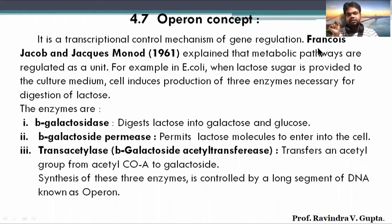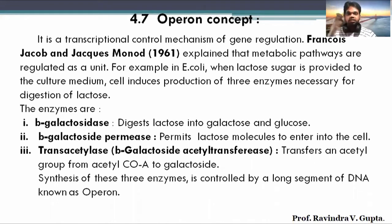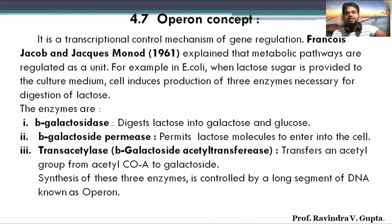This concept was given by scientists Francois Jacob and Jacques Monod in 1961. They explained that metabolic pathways are regulated. What is the meaning of metabolic pathway? If there are chemical reactions in our body, there are many chemical reactions taking place and one reaction depends on another reaction. For example, in the Krebs cycle and aerobic respiration, the product of one cycle is used as raw material in another. That is called a metabolic pathway. These two scientists explained that metabolic pathways are related to units within the DNA.